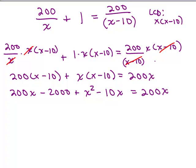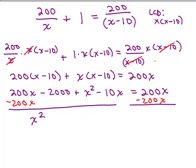Now, at this point, notice we have a quadratic because we have an x squared term. So that means we're going to set the equation equal to 0, and we'll use factoring. So I'm going to subtract 200x from both sides. I can see that's going to wipe out that 200x. And then on the left, these three terms that are left, I'm going to write in descending order. So we'll have x squared minus 10x minus 2,000 equals 0.